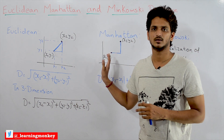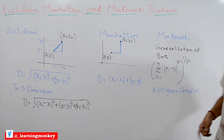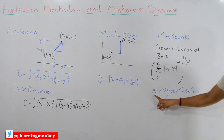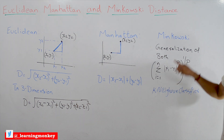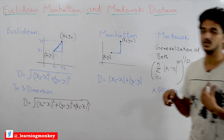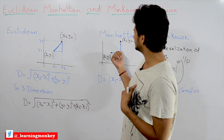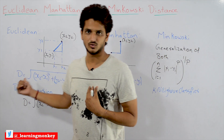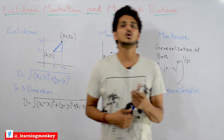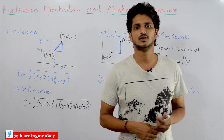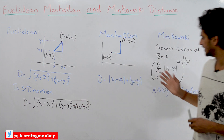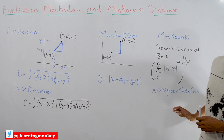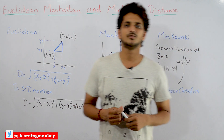In sklearn's KNeighborsClassifier, the default metric is Minkowski distance with a p value parameter. If you set p equal to 1, it uses Manhattan distance; if you set p equal to 2, it uses Euclidean distance. This is how Minkowski distance is implemented in sklearn's KNeighborsClassifier.